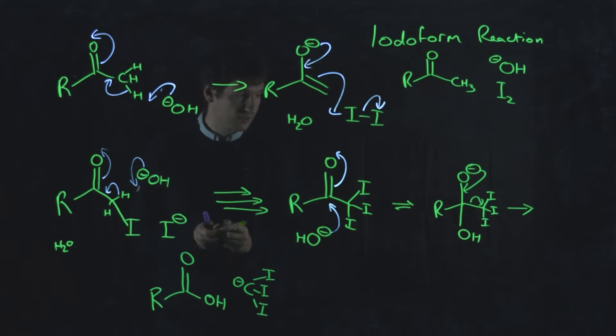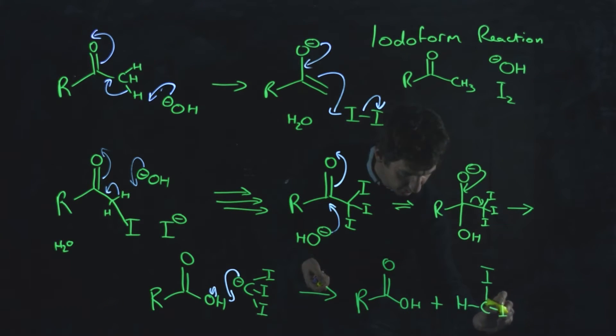So if that happens, you can draw in arrows for that if you want. And what you end up with is a carboxylic acid and triiodomethane, otherwise known as iodoform.